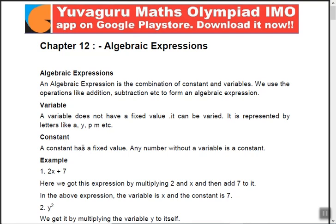A constant is a fixed value — for example, the 7 in 2x plus 7 cannot change at all. Any number without a variable is a constant. We have covered this in one of our earlier videos, so we are moving fast through this.